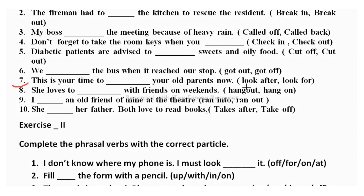Seventh sentence: 'This is your time to dash your old parents.' Options are 'look after' or 'look for.' 'Look after' means to take care of somebody, and 'look for' means to search something. Here we need to take care of parents, so the correct answer is 'look after.'